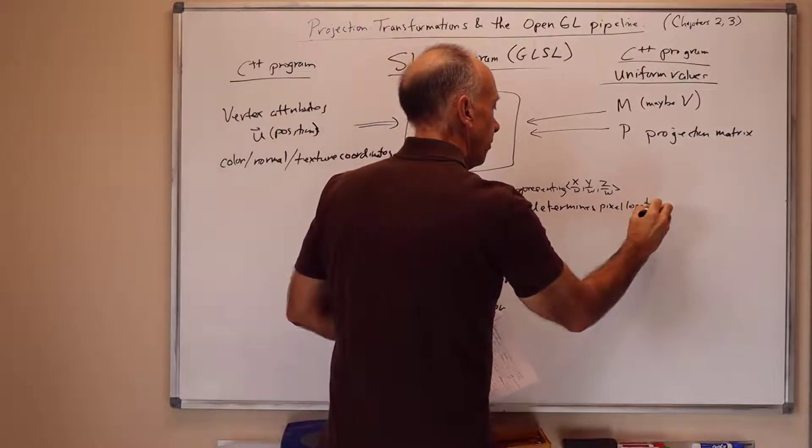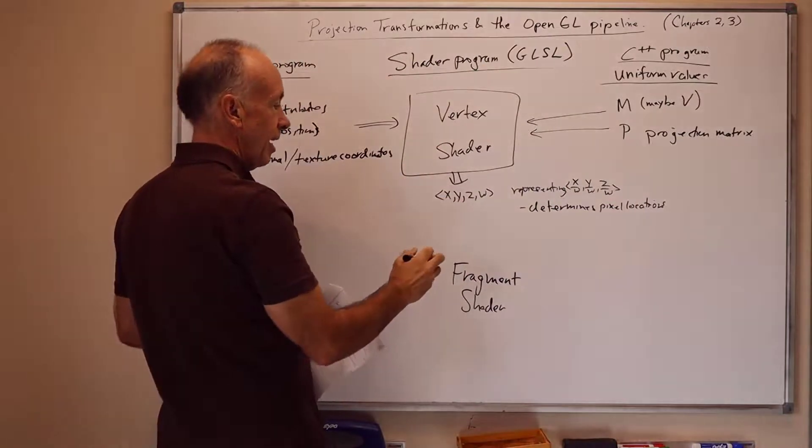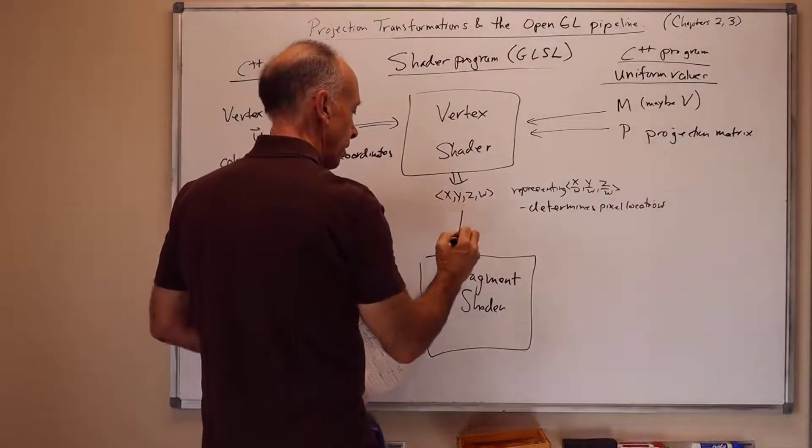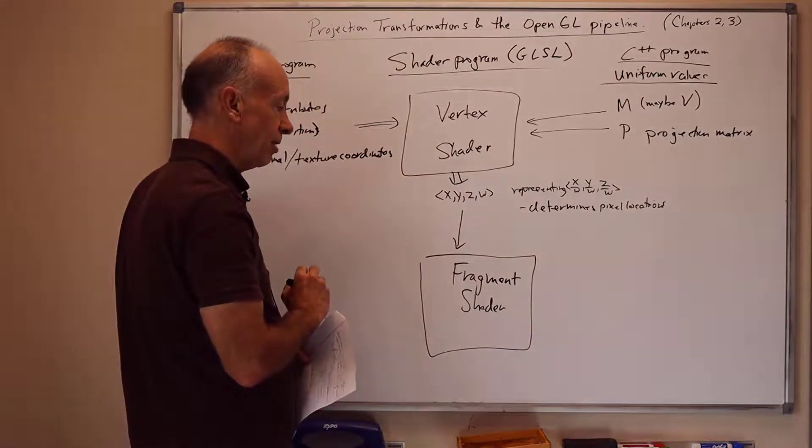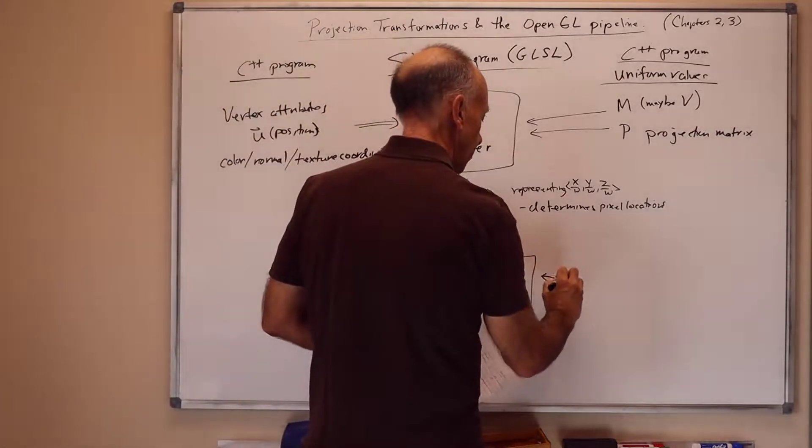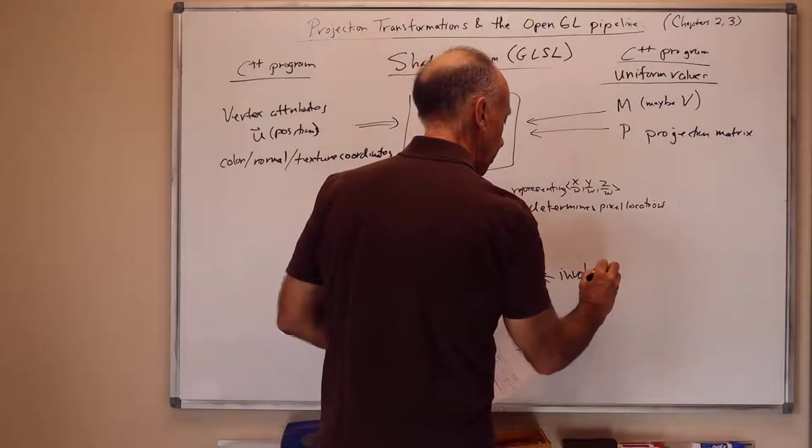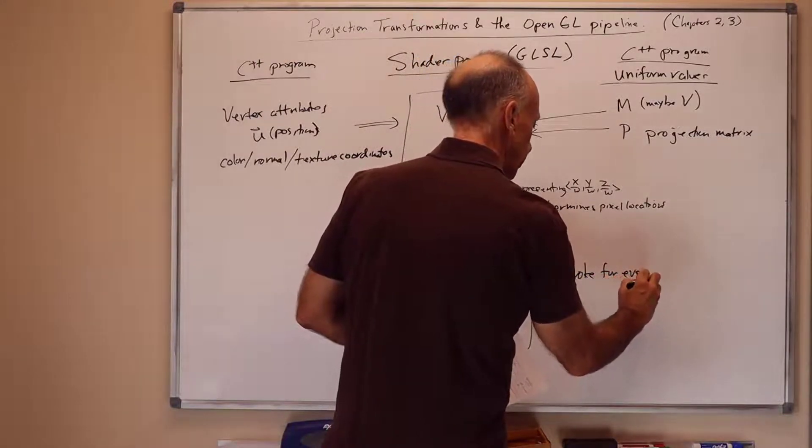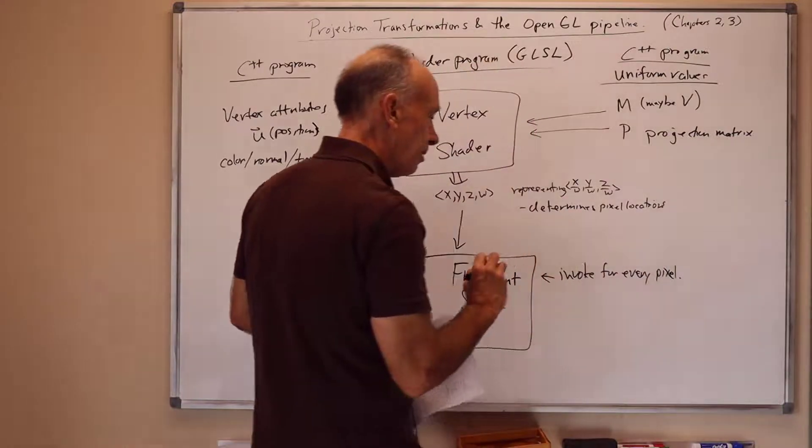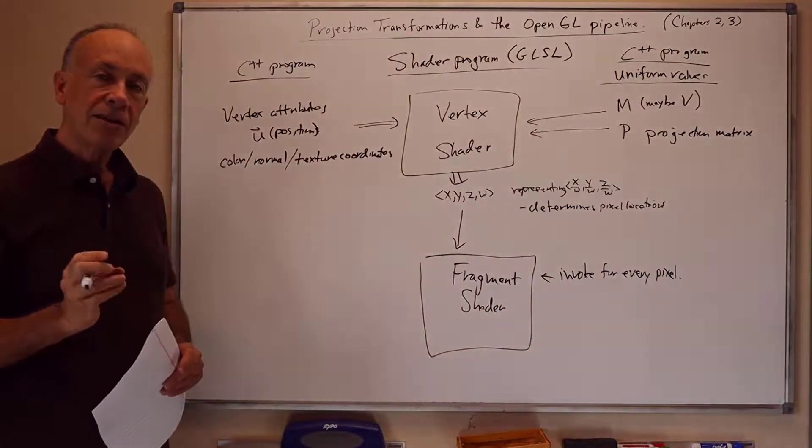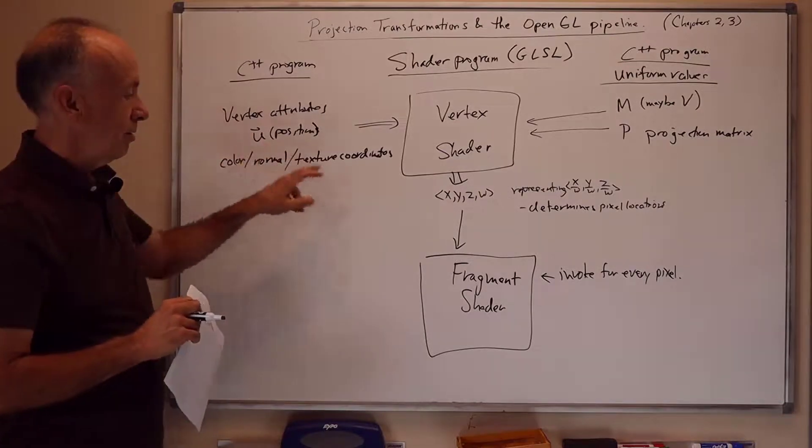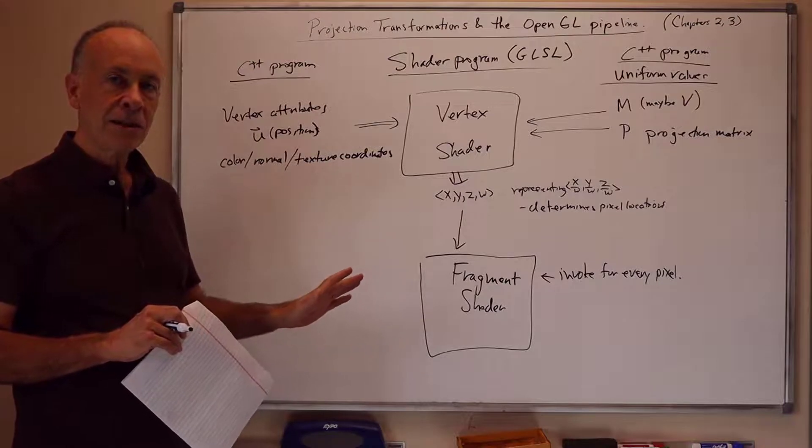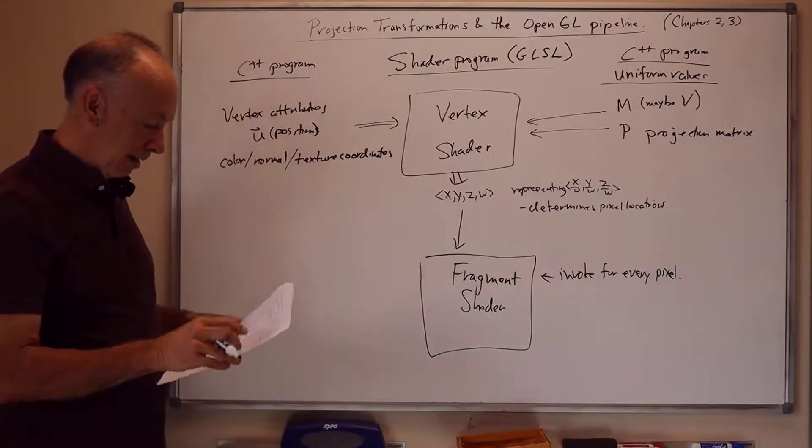And then the OpenGL pipeline processes that and then sends to the fragment shader. For each pixel invokes the fragment shader. So this is invoked for every pixel. If we're rendering a triangle, the fragment shader is invoked for every single pixel. And as discussed in earlier presentations, the values of the vertex attributes that get sent to the fragment shader are interpolated or averaged or shaded, as we all mean the same thing, when they're sent to the fragment shader.